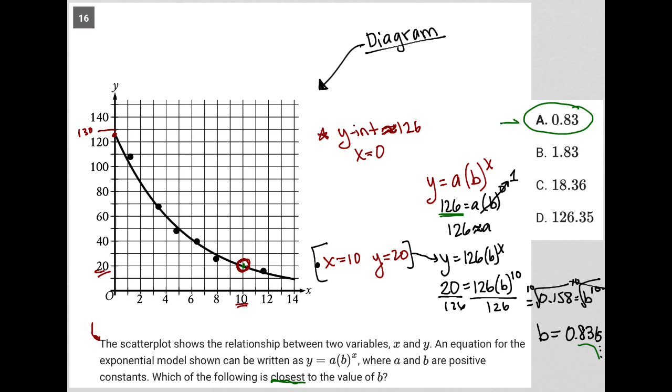And because my answer choices are so far apart, there's no other answer remotely close to 0.83. While I might be off slightly, I'm not off by one or by that much for it to be C, D, or B. So that's why those are gone, and choice A is our best answer here.